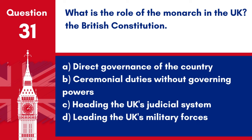Question 31. What is the role of the monarch in the UK? A. Direct governance of the country. B. Ceremonial duties without governing powers. C. Heading the UK's judicial system. D. Leading the UK's military forces. Answer: B. Ceremonial duties without governing powers. The role of the monarch in the UK is largely ceremonial, without direct governing powers.